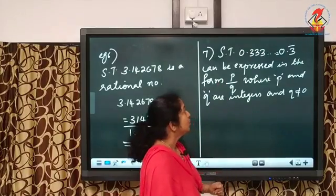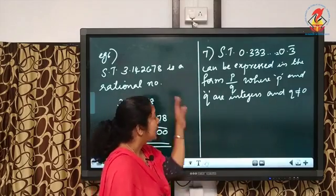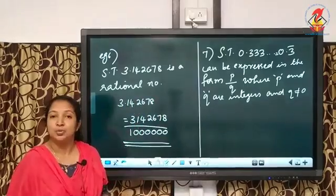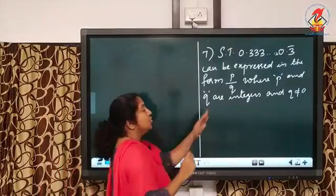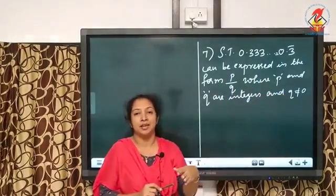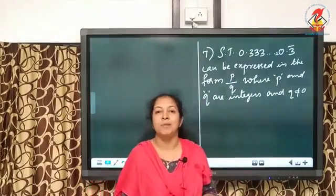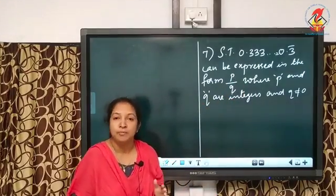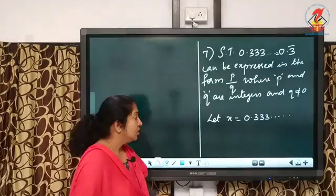Example 7: Show that 0.3333... which equals 0.3 bar can be expressed in the form p by q, where p and q are integers and q not equal to 0. Since 0.3 bar is non-terminating recurring, it is a rational number and can be written as p by q. To find p by q, let x equal 0.333...